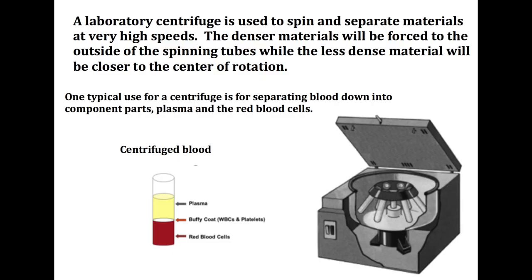Now a real centrifuge would spin thousands of times faster and it's used to separate materials according to their density or the particle size. A typical example might be separating the components of blood.